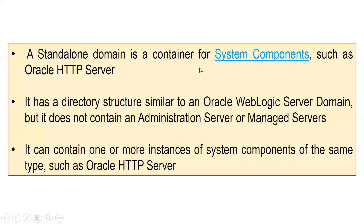When we talk about standalone mode, a standalone mode domain is a container for system components such as Oracle HTTP Server. We have two kinds of components: Java components and system components. A Java component is completely based on Java, while a system component is not purely Java — parts of it may be designed in another language like C or C++. Oracle HTTP Server is a system component, just like OID and OVD from Oracle.